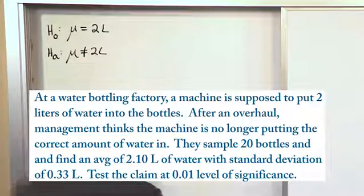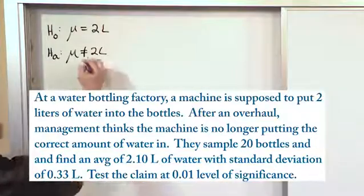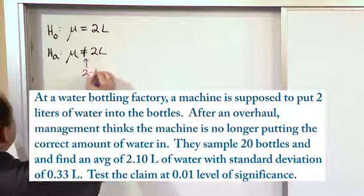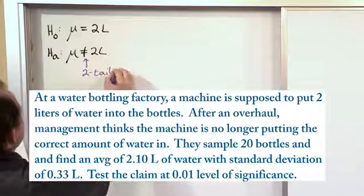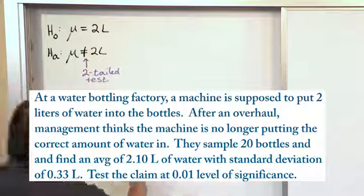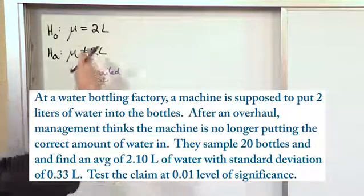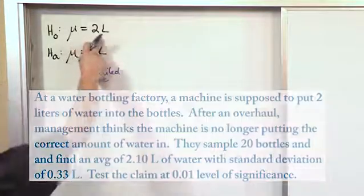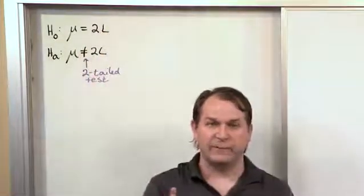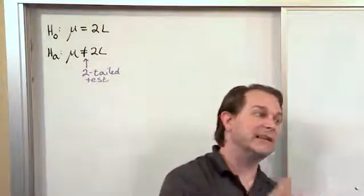Now, because we have a not-equal symbol in the alternate hypothesis, we know that we're going to be running a two-tailed test. So it's not going to be just a right-half test or just a left-hand test — we're going to have two tails. That's because the machine might be putting consistently more than two liters or consistently less than two liters, so we look on either side of the mean.